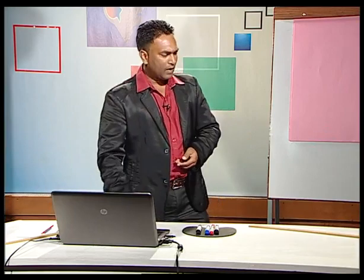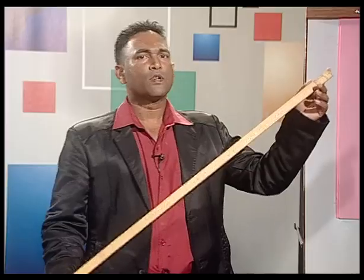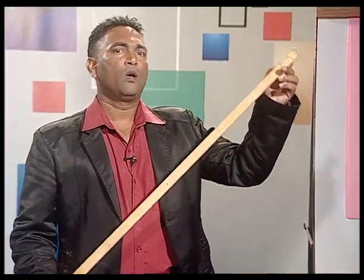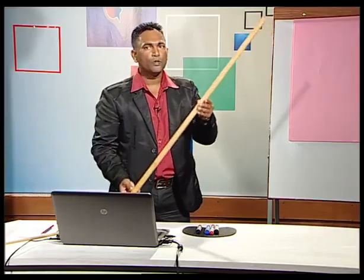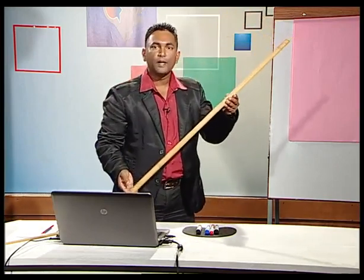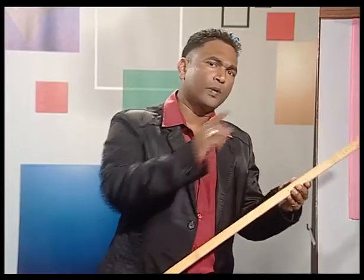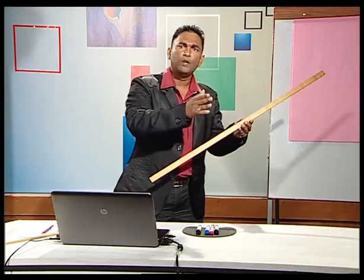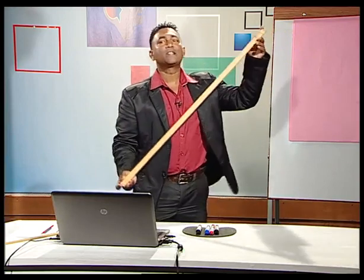Have a look at this object. This ruler has a length of exactly one meter. It is called a meter rule. This length of one meter is the same across the world — whether you go to Reunion Island, to South Africa, to India, to Europe, to America — wherever you go in the world, the length of one meter is the same.